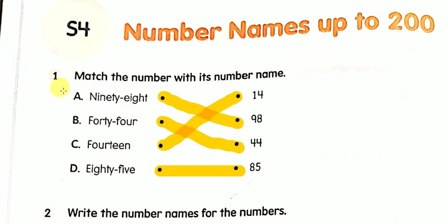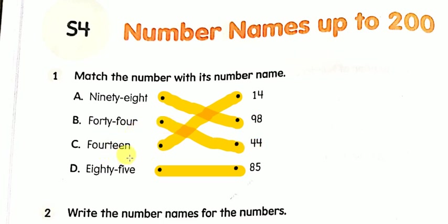First question here is: match the number with its number name. First read the number name and match it with the correct number. See — ninety-eight. Where is ninety-eight here? Match it. Forty-four. Fourteen. And eighty-five.